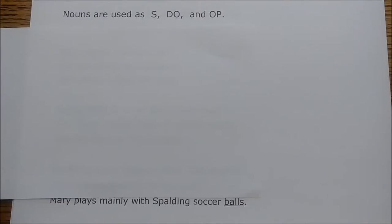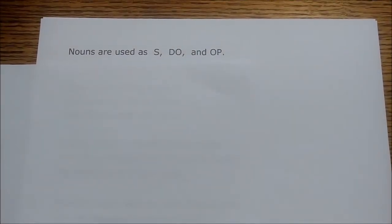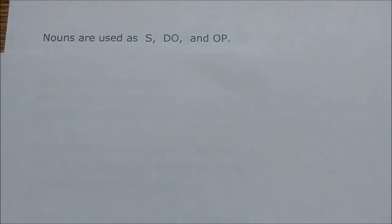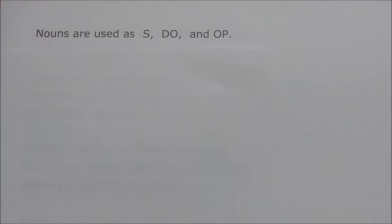Nouns are used as subjects, direct objects, and objects of the preposition. In fact, you can almost call this a rule: you will always find that if there's a subject in the sentence, it will be a noun. If there's a direct object, it will be a noun. And if there's an object of the preposition — in other words, inside a prepositional phrase — it will be a noun.